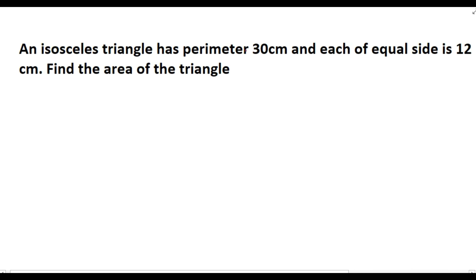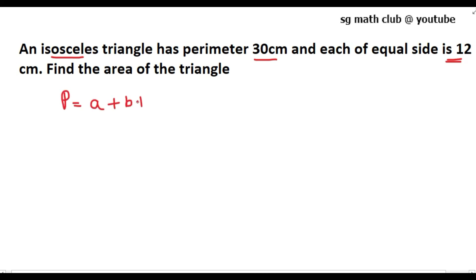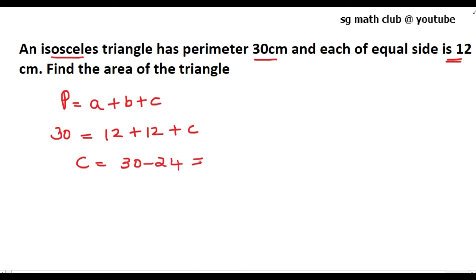The fourth question: an isosceles triangle has a perimeter of 30 cm. An isosceles triangle has two equal sides; each equal side is 12 cm. Find the area of the triangle. Taking a = b = 12 cm, the third side c = 30 − 24 = 6 cm.